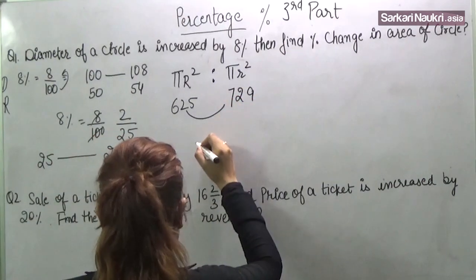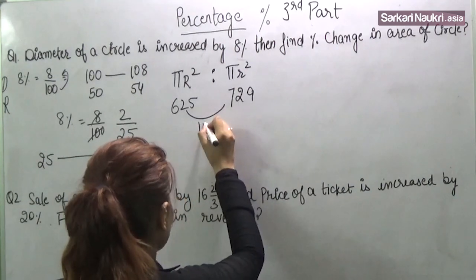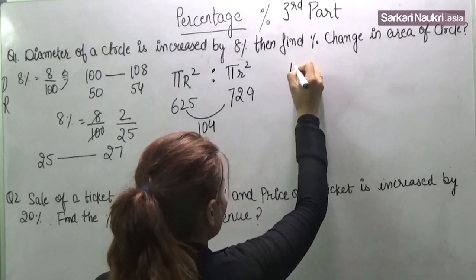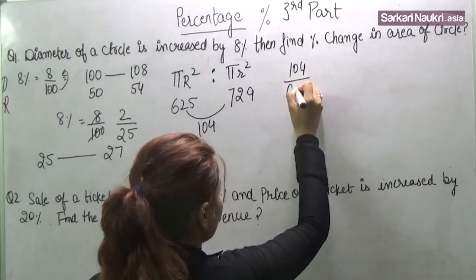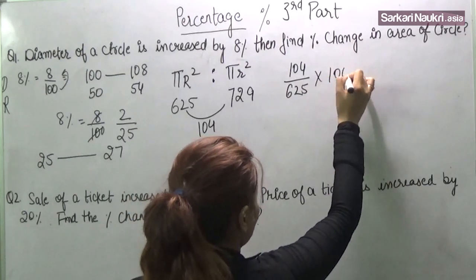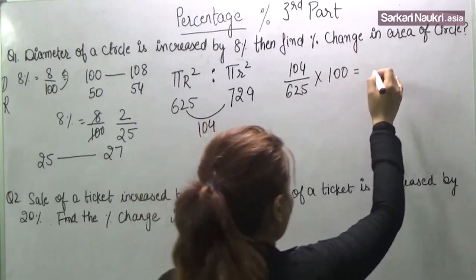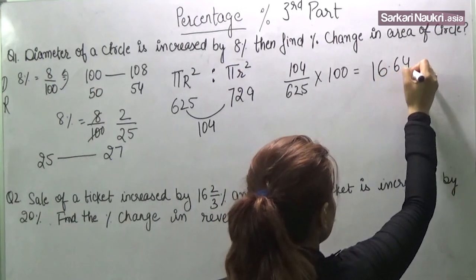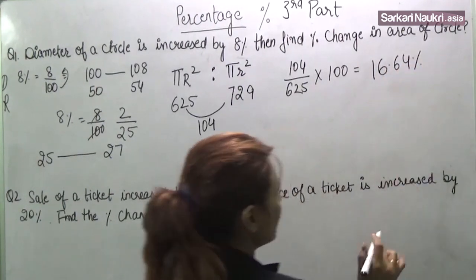What is the difference? Difference is 104. So it is 104 over 625. We need to find the percent change, so we will multiply this by 100 and at last what we will find is 16.64% and this is the answer.